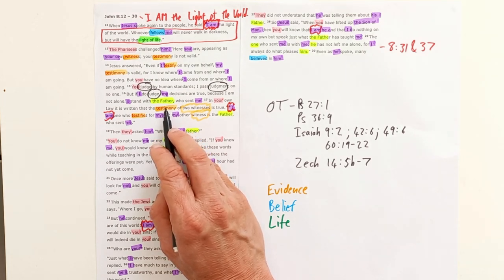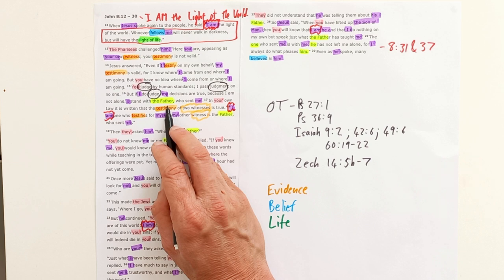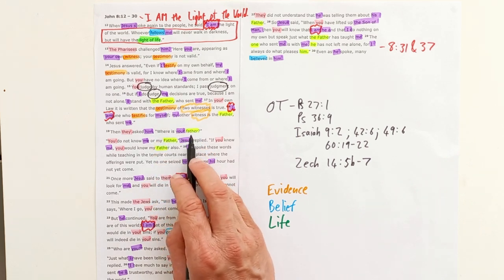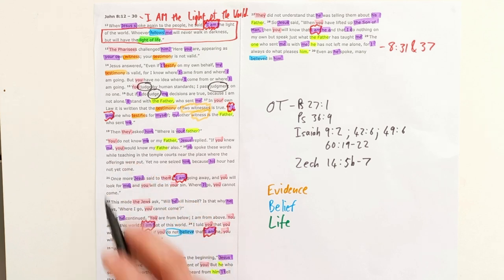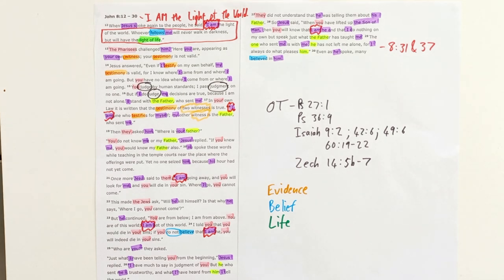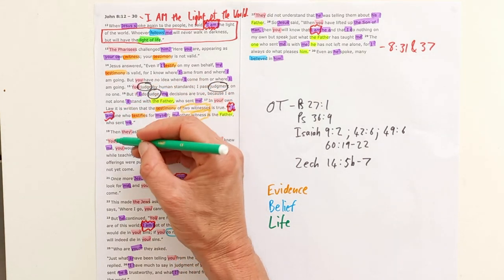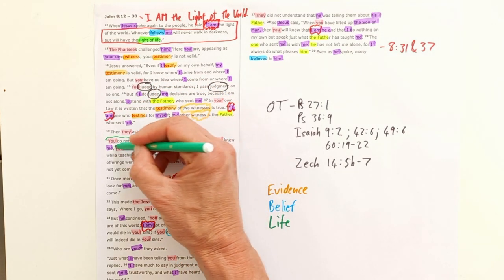Showing that he is who he says he is. But they then say 'who is your father?' And Jesus replies, 'Well you don't know me.' We've heard that before from Jesus's lips in the previous section where Jesus said 'you have no idea who I am or where I am from.' He says here, 'you don't know me, you don't know me or my father.'